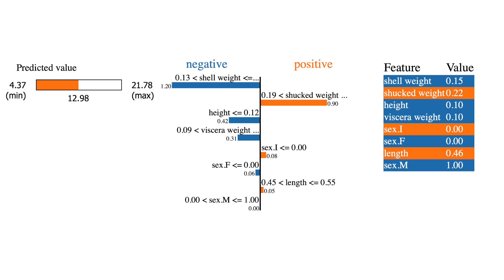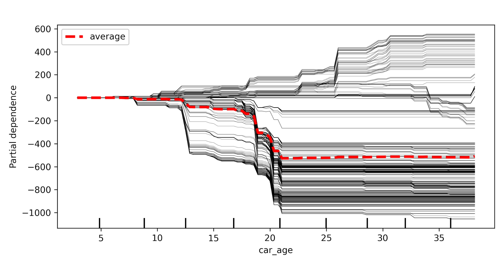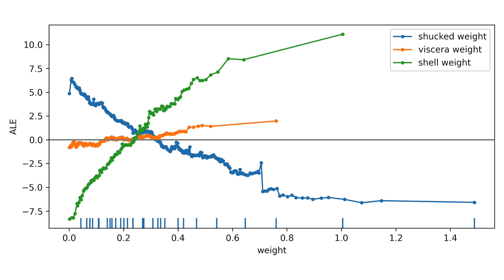There are a few ways to permute features, and different explainable AI methods use different approaches. For LIME, we sample from a normal distribution with the same mean and standard deviation as the feature. For PDPs, we sample from the entire range of the feature. For ALEs, we sample from a small interval around a feature value. In all cases, we will not sample values that are vastly different from the original feature values.